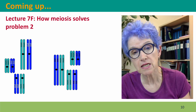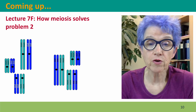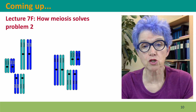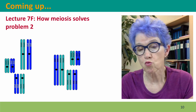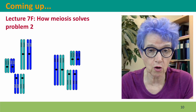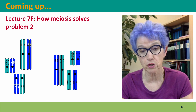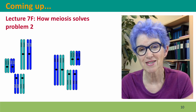Coming up next, lecture 7F, we're going to talk about how meiosis solves problem 2 — randomizing the combinations of chromosomes that get put into the daughter cells. I hope to see you there.